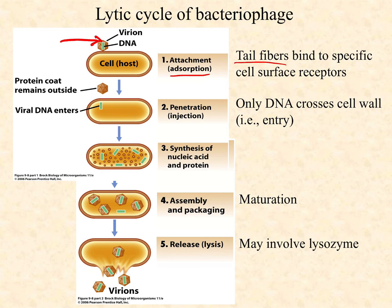The next stage is injection or penetration — this is when the viral DNA enters the cell. One thing worth noting: the capsid does not follow the DNA into the cell. The chemical interactions that brought the phage to the surface in the first place are still holding it there. Only the DNA crosses the cell wall in this entry phase; the capsid itself does not.